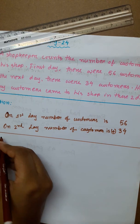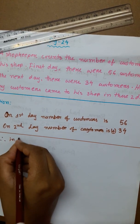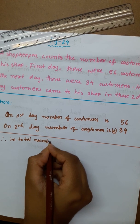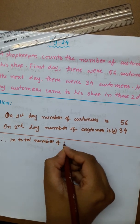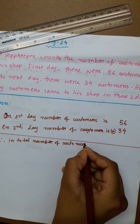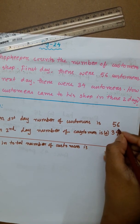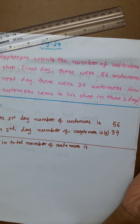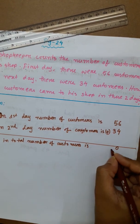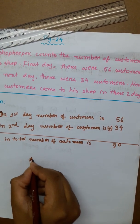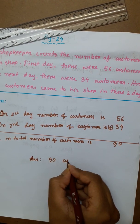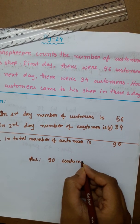Therefore, in total, number of customers: 6 plus 4 is 10, carry 1. 5 plus 4 plus 1 is 9. So the answer is 90 customers.